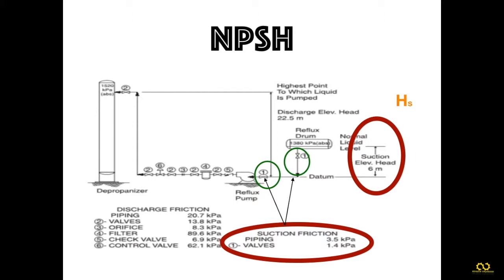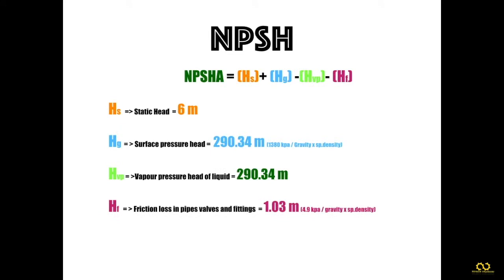To identify net positive suction head, the head is measured in meters or feet. Next is the surface pressure of the liquid, given as 1380 kilopascals. You should consider the suction surface pressure, not discharge pressure, as cavitation only concerns the suction side. This should be converted to meters. The given vapor pressure is also 1380 kilopascals. Normally, engineers calculate vapor pressure using the inlet temperature.